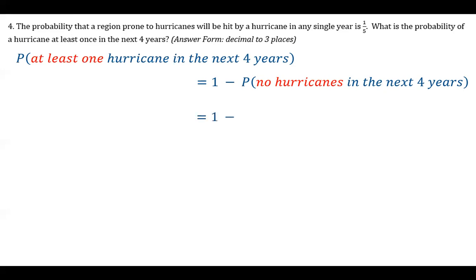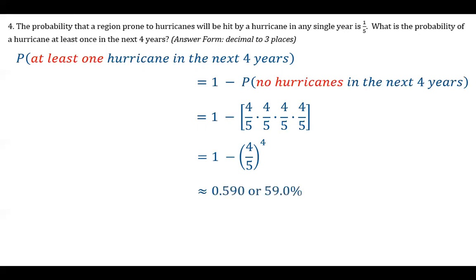Let's think about how we calculate the probability of no hurricanes in the next four years — just go year by year. The probability that there is a hurricane in a single year is one out of five, so the probability that there won't be a hurricane in any single year is four out of five. For each one of those four years, the probability of no hurricane is four out of five. So we have one minus four-fifths times four-fifths times four-fifths times four-fifths, or one minus four-fifths to the fourth power. Calculate that and you get approximately 0.590, or about 59%.